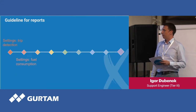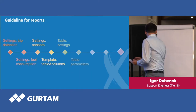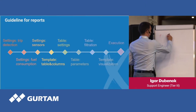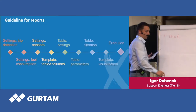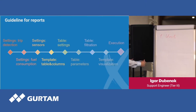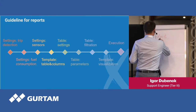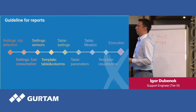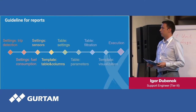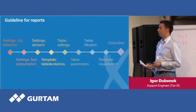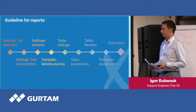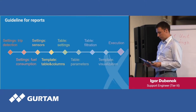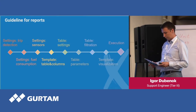Now let's consider the basic concepts of reports. In order to generate a report, you need a unit — though reports can be generated not only for a unit but for other items as well. The unit must have messages. There are some settings in the unit that are crucial for reports, such as trip detection, fuel consumption, and sensors. On the trip detection tab, you define the main conception about detecting trips. I will show you some practical examples later.